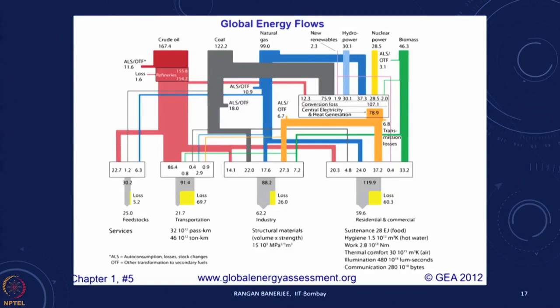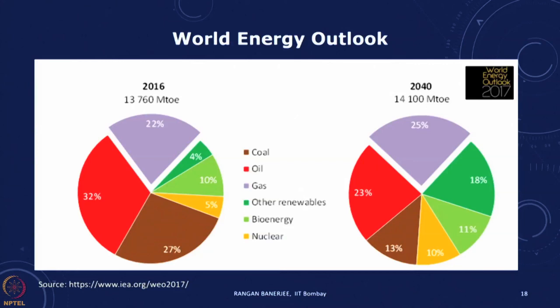Similarly, one can do the same thing for any country in the world. One exercise I would like you to attempt is to take a particular country, use that data, and create this kind of diagram. You can look at the mixes in terms of primary energy, final energy, or secondary energy in between. Looking at 2016, the world is predominantly using oil, followed by natural gas and coal as the major contributors, with a significant amount of bioenergy, other renewables, and nuclear. It is expected that in the future, the share of renewables is going to increase.